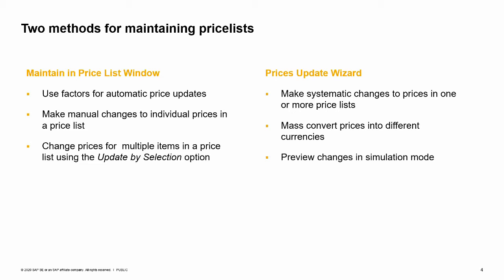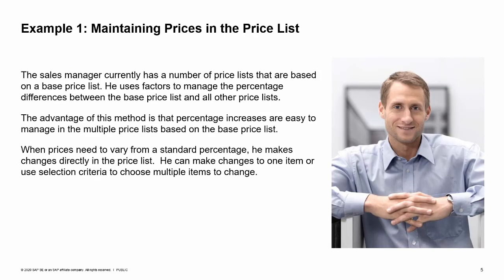In this lesson, we will explore the two methods and discuss how they are used. The sales manager currently has a number of price lists that are based on a base price list. He uses factors to manage the percentage differences between the base price list and all other price lists. For example, prices in the seasonal price list are set to always be double the prices on the base price list. The advantage of this method is that percentage increases are easy to manage across multiple price lists based on the base price list.